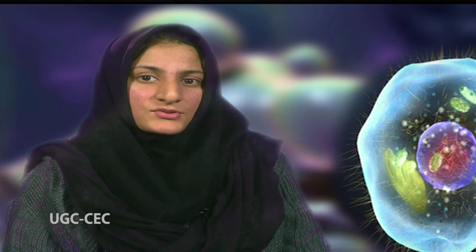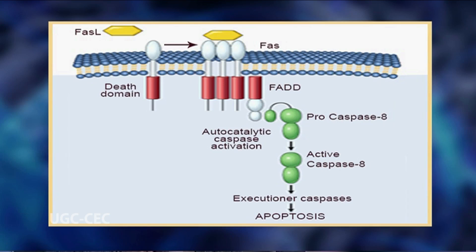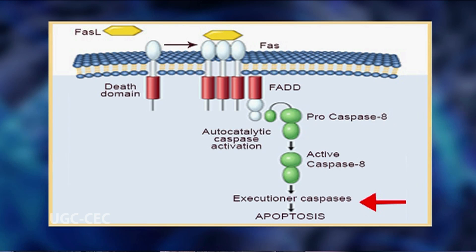In all of these signaling pathways, the binding of an extracellular ligand causes a change in conformation of a receptor that leads to the binding and activation of proteins situated downstream in the pathway. Caspase-8 is described as an initiator caspase because it initiates apoptosis by cleaving and activating downstream executioner caspases that carry out the controlled destruction of the cell.